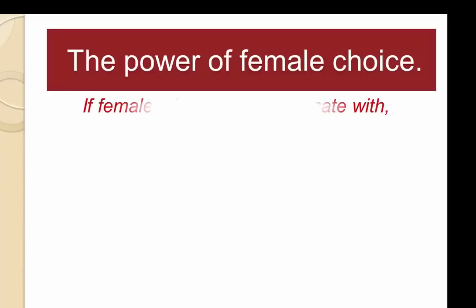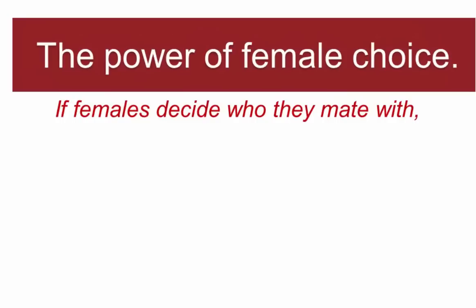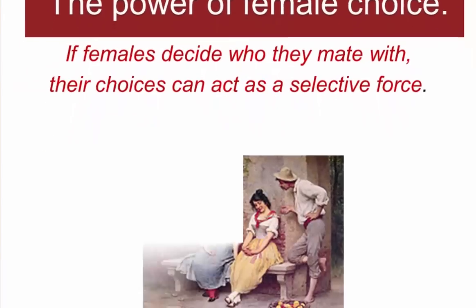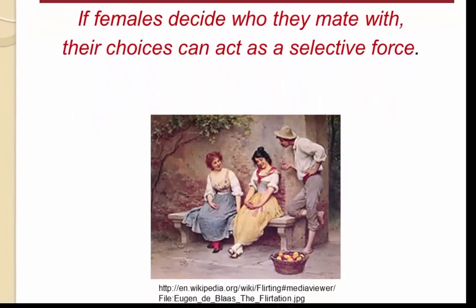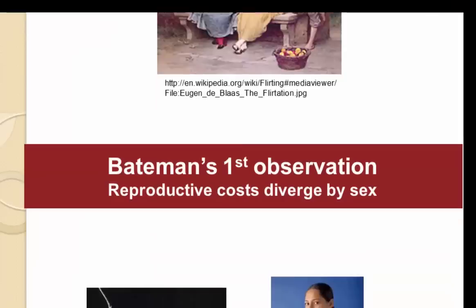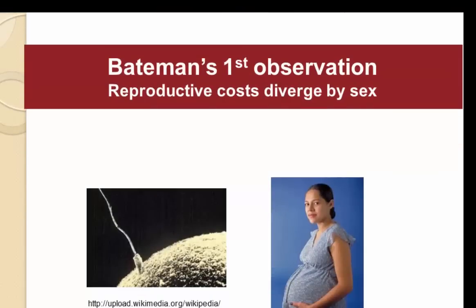To get started, let's go back to what Darwin called the power of female choice. If females decide who they mate with, their choices can act as a powerful selective force, and this has come to be called intersexual selection. Darwin's most famous example is the tale of the peacock, which he presumed to be the outcome of the choices of the pea hen.